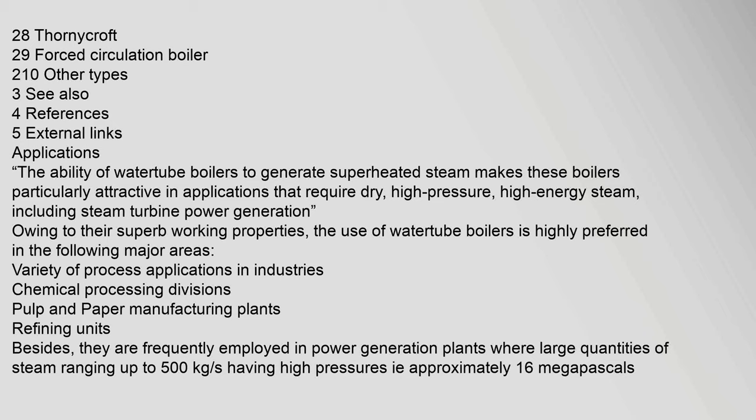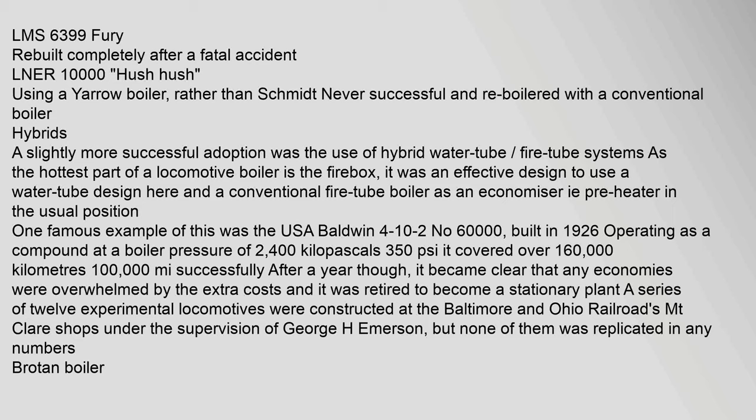Water tube boilers are frequently employed in power generation plants where large quantities of steam are required. In railway applications, some notable examples include the LMS 6399 Fury, rebuilt completely after a fatal accident, and the LNER 10000 'Hush-Hush', which used a Yarrow boiler rather than Schmidt, but was never successful and was re-boilered with a conventional boiler. A slightly more successful adoption was the use of hybrid water tube and fire tube systems.